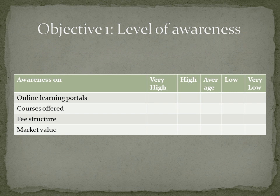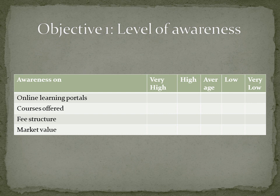My first objective is to know the level of awareness of students about online courses. Awareness is a constructive or abstract variable, so instead of directly measuring it by asking 'are you aware about online courses?', we can break it down into small aspects of awareness. By consolidating scores for different elements of awareness, we get a truer idea of their awareness level. I have used 4 sub-variables to measure awareness.